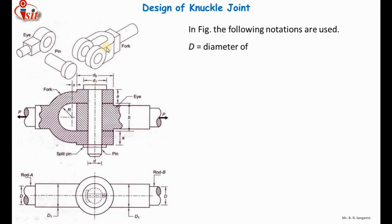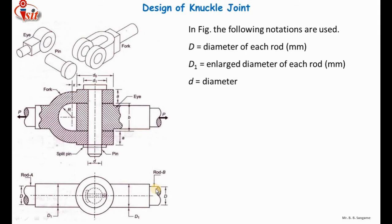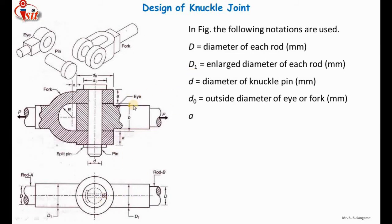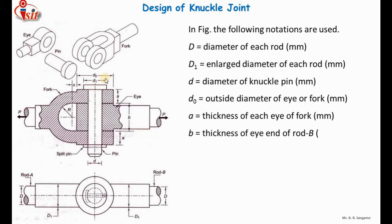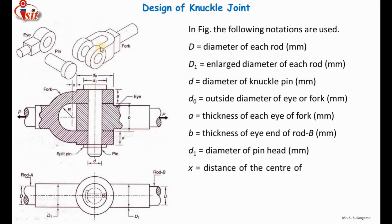Here I have shown the figure of the knuckle joint — a three-dimensional figure with the fork, the pin, and the eye, along with a sectional front view and top view. Capital D is the diameter of the two rods connected to the fork and eye. D1 is the enlarged diameter of the rods. Small d is the diameter of the pin. Do is the outside diameter of the eye and fork. A is the thickness of the eye of the fork, B is the thickness of the eye, and X is the distance of the center-of-fork radius from the eye.